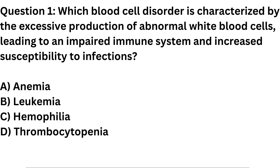Question 1. Which blood cell disorder is characterized by the excessive production of abnormal white blood cells, leading to an impaired immune system and increased susceptibility to infections? A. Anemia. B. Leukemia. C. Hemophilia. D. Thrombocytopenia.